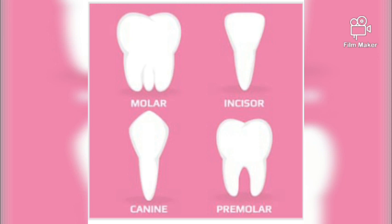The fourth type of teeth is molars. Molars are twelve in number, three on both sides of the premolars in each jaw. They have a flat surface to grind the food. Molars are larger than premolars. One interesting fact: the elephant's tusks are actually its incisors that have become long, and they are used for digging and fighting.